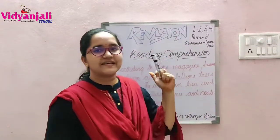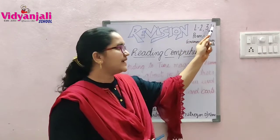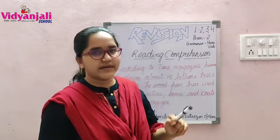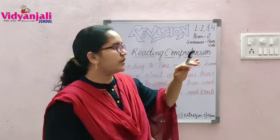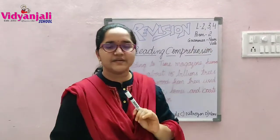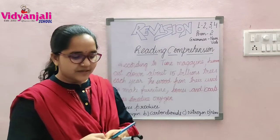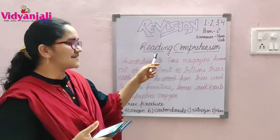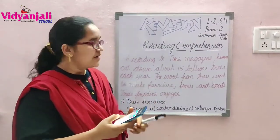Before that, open your blueprint which I asked you to write in your English classwork. Have you all written? Open that blueprint, open English classwork, textbook and grammar book. Be ready. First, let's see what's our syllabus: Lesson 2, Lesson 3, Lesson 4, Poem 2, Grammar — Nouns and Verbs topic. If you open the blueprint, what is the first section in Section A? Reading skills — that is reading comprehension, for 5 marks.